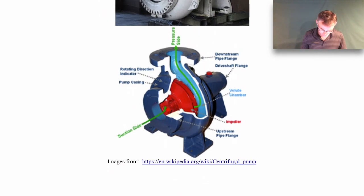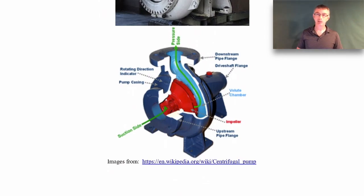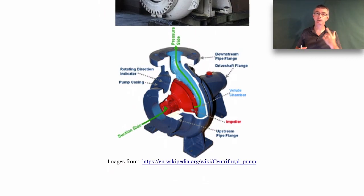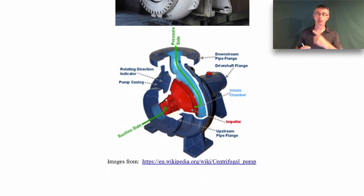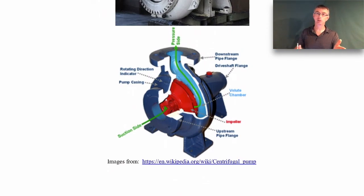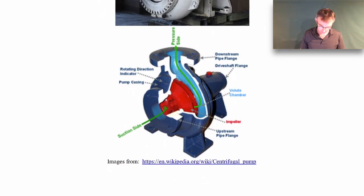The flow comes in with low pressure and goes into this spinning impeller — the red thing — and what it does is throw the fluid to the outside. If you're standing on a merry-go-round at some radius, from Newton's first law you want to go in a straight line, but because the merry-go-round is spinning it feels like you're being thrown out to the side. That's what's happening to the water here — the liquid gets thrown out through the edges of the impeller.